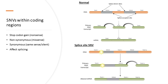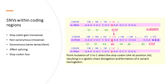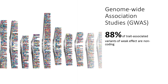Some SNVs at or near splice junctions may affect splicing. Finally, some SNVs change a stop codon to a codon encoding an amino acid, resulting in an extension of the protein, which may have altered or disrupted stability, structure, and function. Synonymous, intronic, and intergenic variations are often ignored; however, according to GWAS studies, 88% of trait-associated variations of weak effect are non-coding.